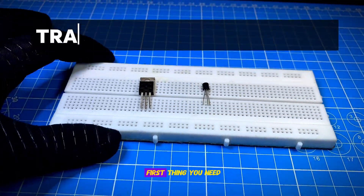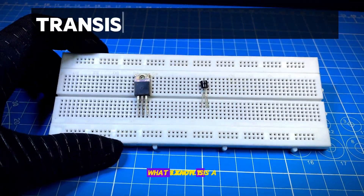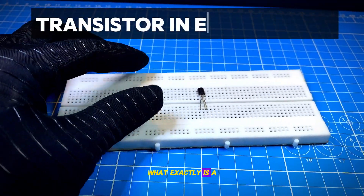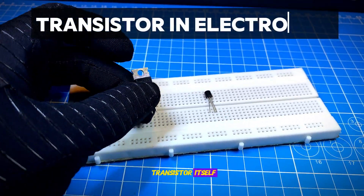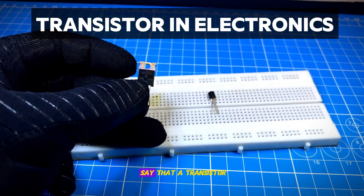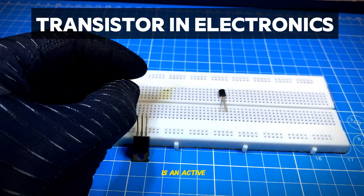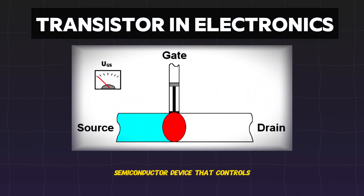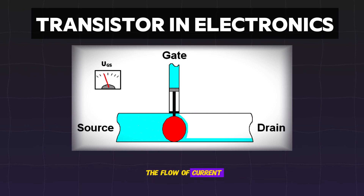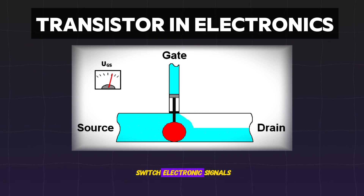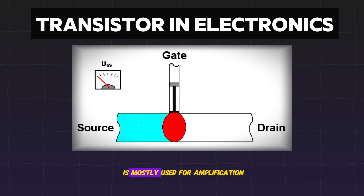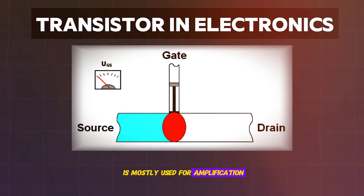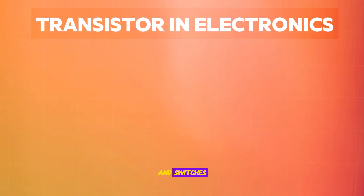Welcome back. The first thing you need to know is what exactly is a transistor itself? Briefly, we can say that a transistor is an active semiconductor device that controls the flow of current and can amplify or switch electronic signals. In fact, a transistor is mostly used for amplification and switching.